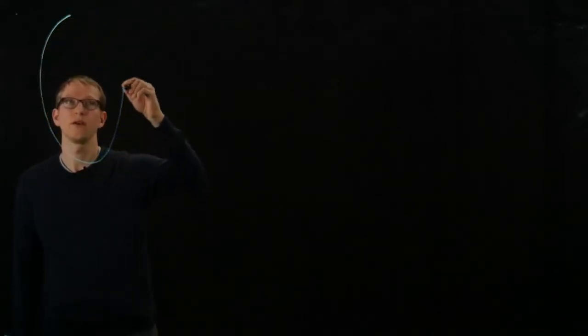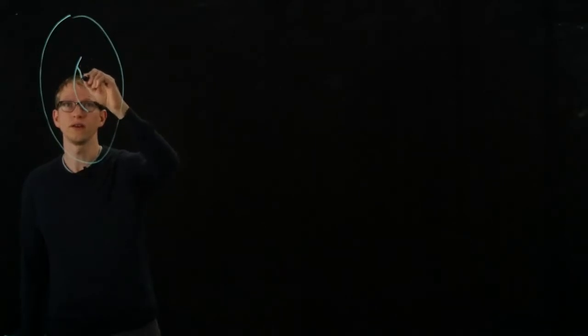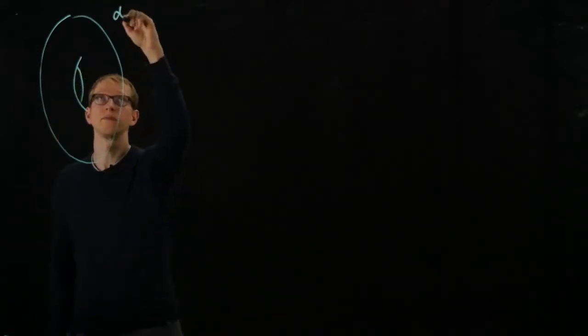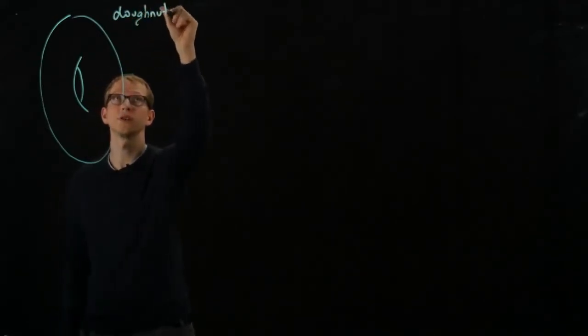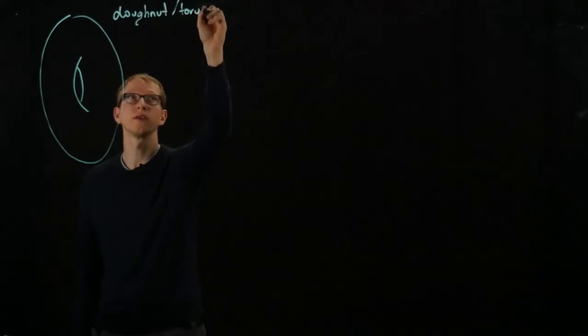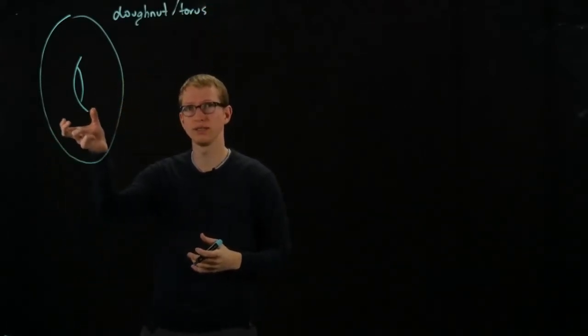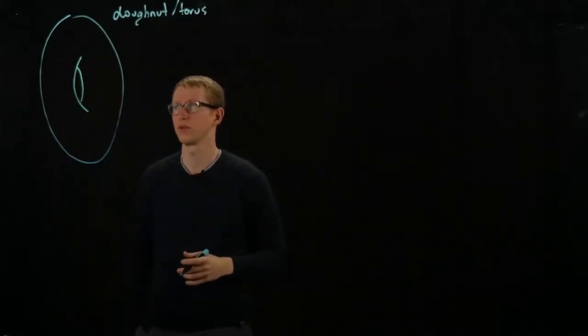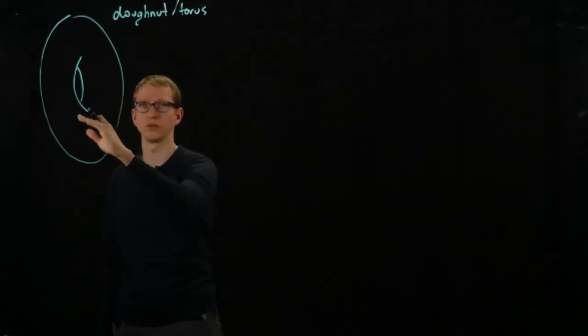But before we do that, let's just make an impressionistic viewpoint, and let's consider a torus. So this is a surface, which is often called a donut or a torus, and it's hollow, so we don't actually include the interior of this. So this is a surface for which when we slice it, all we have are these circles.